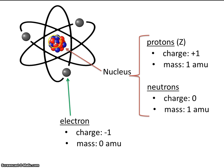Protons have a charge of plus one. Neutrons have a charge of zero. Electrons have a charge of minus one.